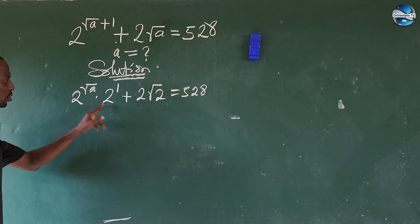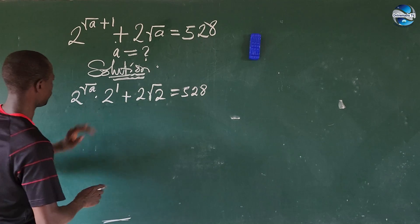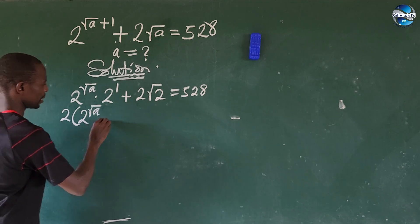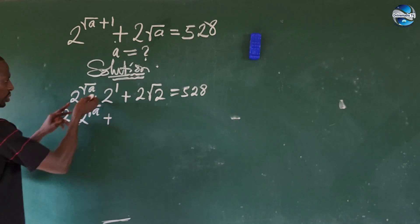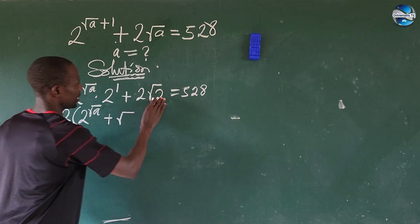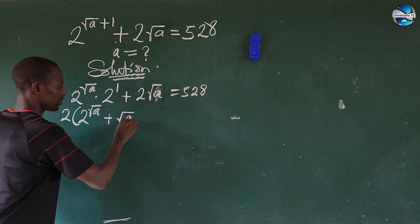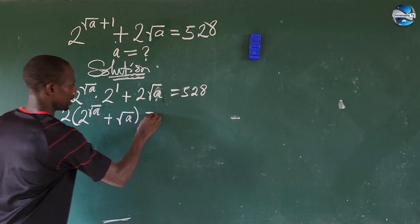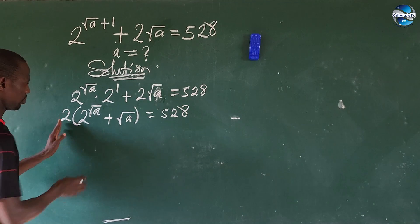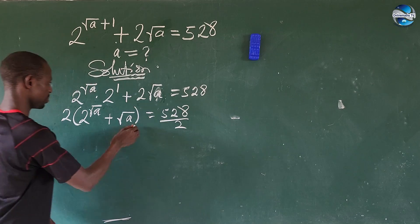2 is common here — 2 to the power of 1 still gives us 2 — so we can factor out 2. If we factor out 2, we get 2 times (2 to the power of root a, plus root a), equal to 5 to 8. We divide through by 2 since 2 can equally divide this side.